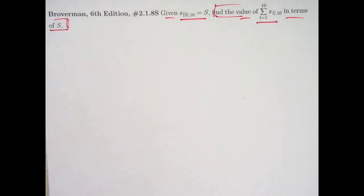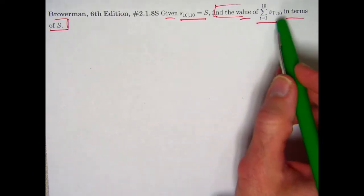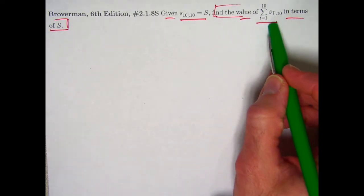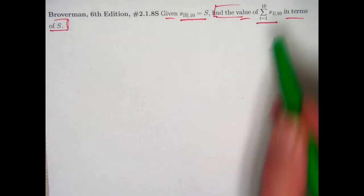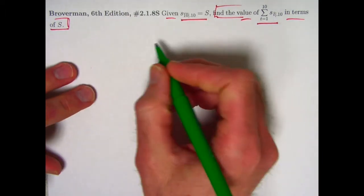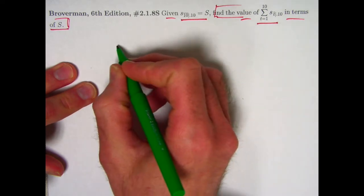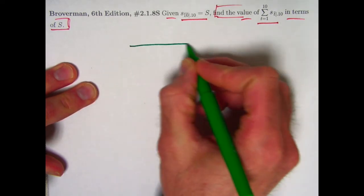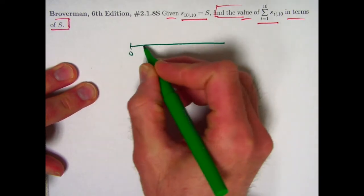Now there's an initial temptation here to maybe think you need to make a number line and try to work this out in a complicated way. But actually it turns out to be best just to work with the summation as it is based on the formula for this future value here. Let me remind you of what this symbol means. I'll draw a number line for that.